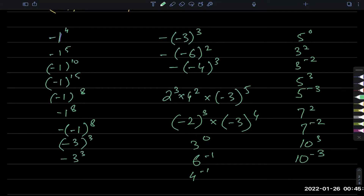The first one is going to be minus 1. Very good. The second one is also going to be minus 1, because 1 power 5 and then the answer is multiplied with the negative. And the third one is not minus 1 — notice there are parentheses and the power is outside. Any negative number with an even power is positive, so minus 1 power 10 is plus 1.